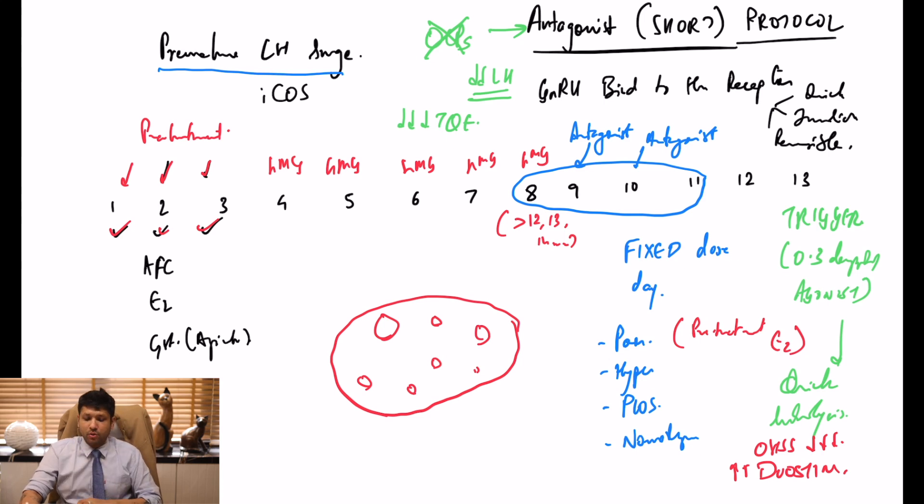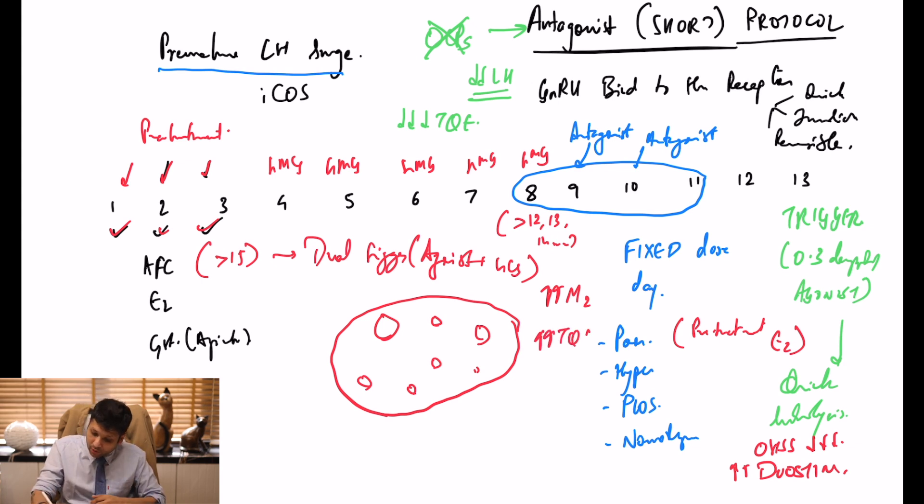When you use antagonist protocol, it's important that as a clinician you follow up these oocytes and how the stimulation resulted in blastocyst embryos. One tip we like to give: if the total antral follicle count is more than 15, instead of single trigger we give dual trigger consisting of agonist along with HCG. We've seen that consistently gives increased metaphase 2 oocytes and increases top quality embryos.